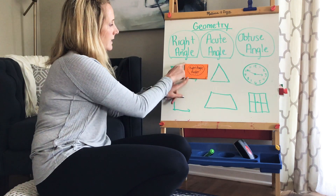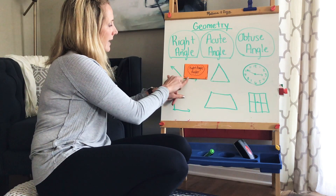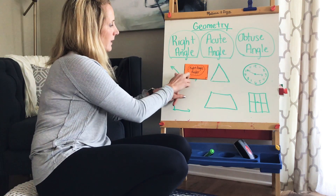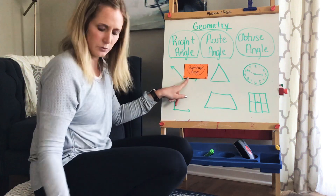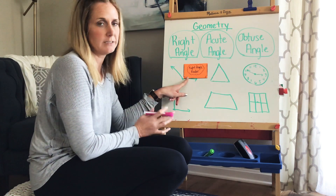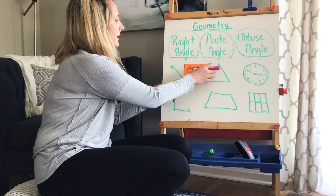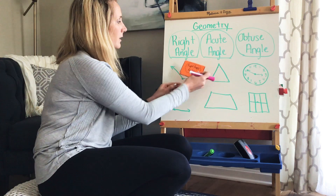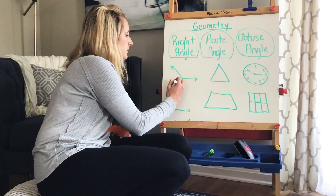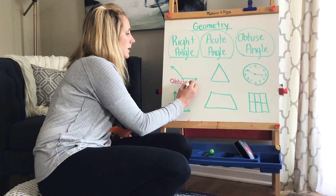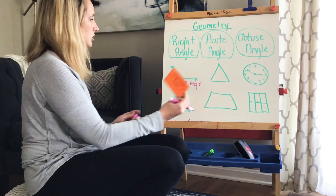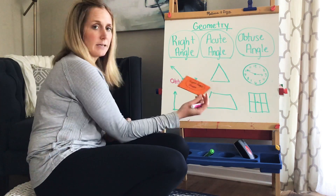Right here is my right angle. This line goes up here, and if my ray goes outside of my right angle, what do we call that? Give yourself a second to think — pause the video if you need to. If you remember, it is wider or bigger than a right angle, and we call that obtuse. So this is an obtuse angle.